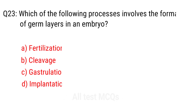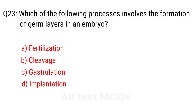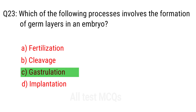Q23. Which of the following processes involves the formation of germ layers in the embryo? The right answer is option C: Gastrulation.